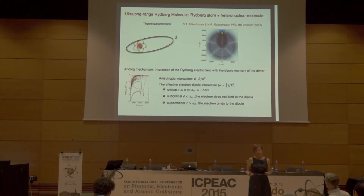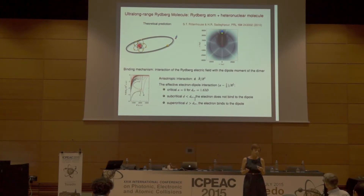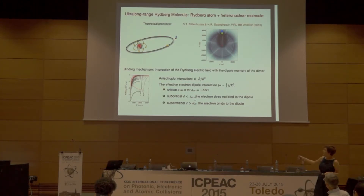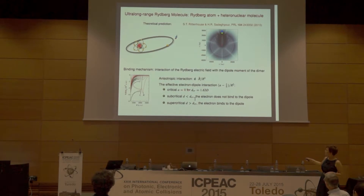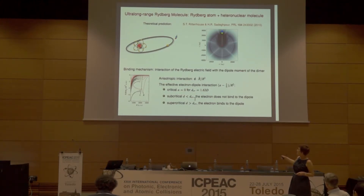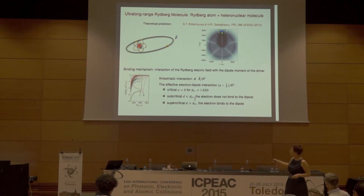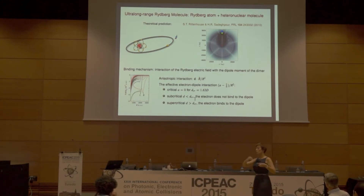This oriented and anti-oriented structure gives the idea of the possibility of entanglement, using these well-oriented states for quantum computing. The binding mechanism is this interaction with the electric field — an anisotropic interaction, very long range, going as r to the minus two. We have a critical value when the dipole moment equals 1.63 debye. When the dipole moment of the diatomic molecule is below that value, the electron will not bind to the diatomic molecule. But when the dipole moment is stronger, we are in the supercritical regime, and the electron from the Rydberg atom binds to the molecule.